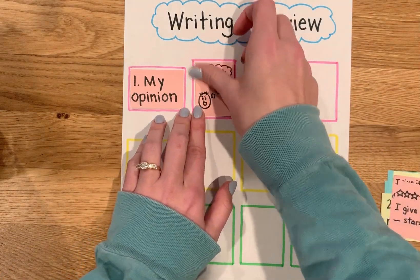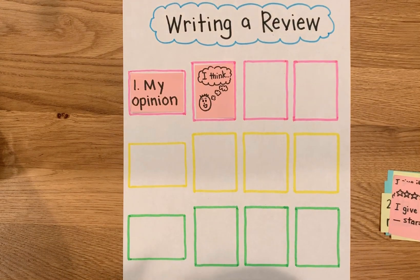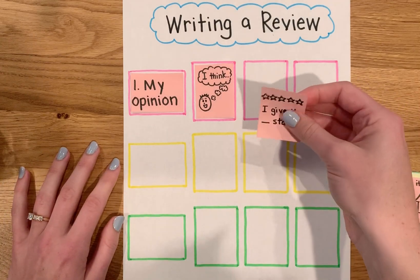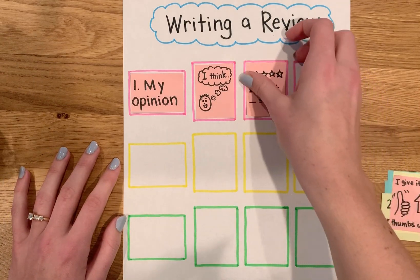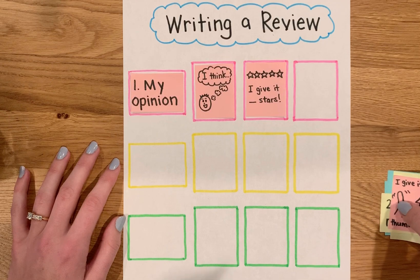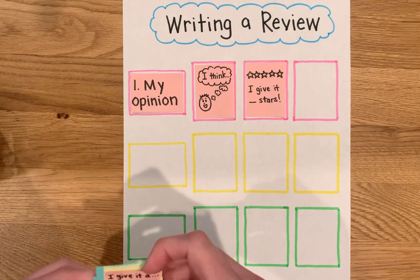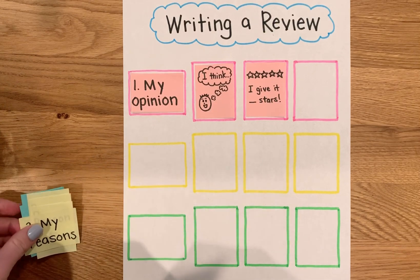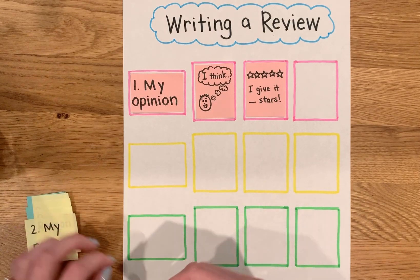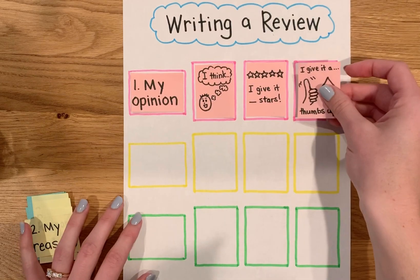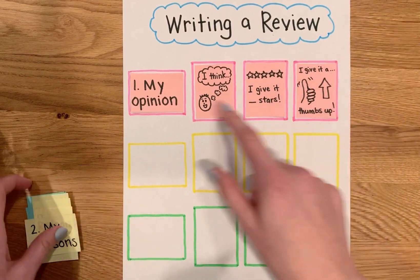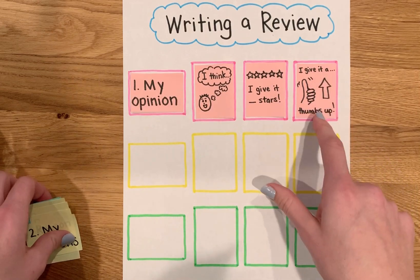We can start by saying, "I think this restaurant is the best restaurant in town." Another thing we can do is give it a rating — five stars if we really like it, four stars if we like it a lot but not quite five, or zero or one star if you don't like it at all. Another thing you can do to share your opinion is say something like, "I give it a thumbs up."